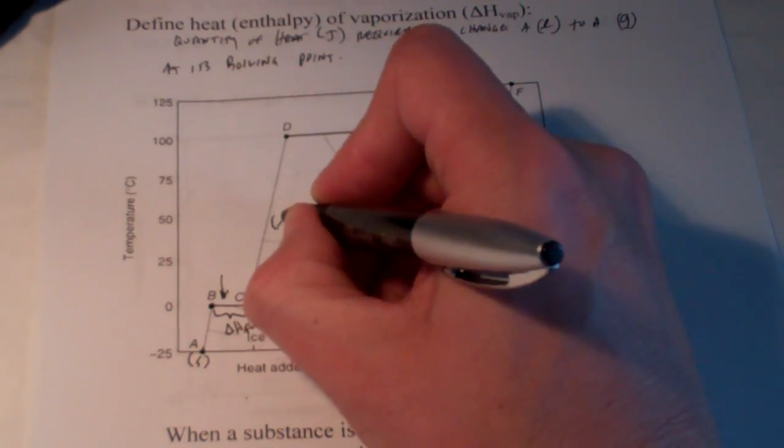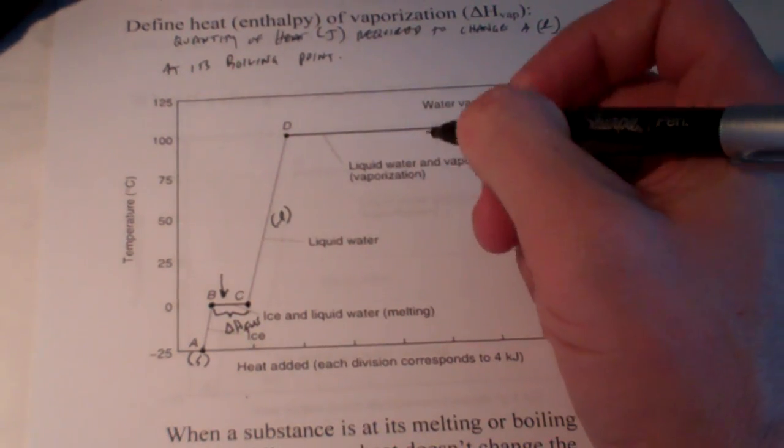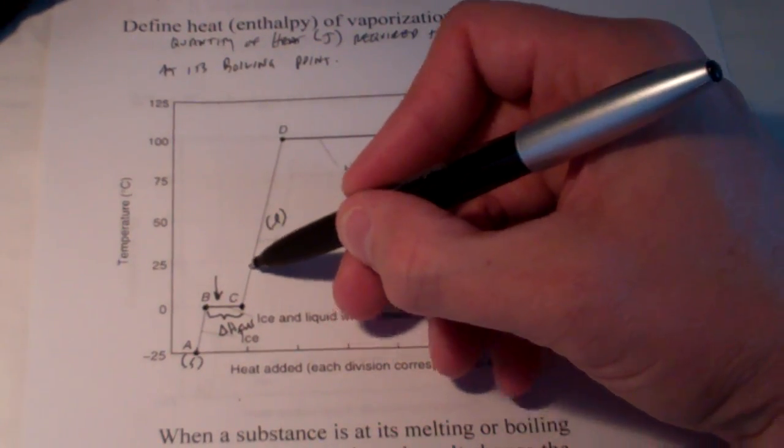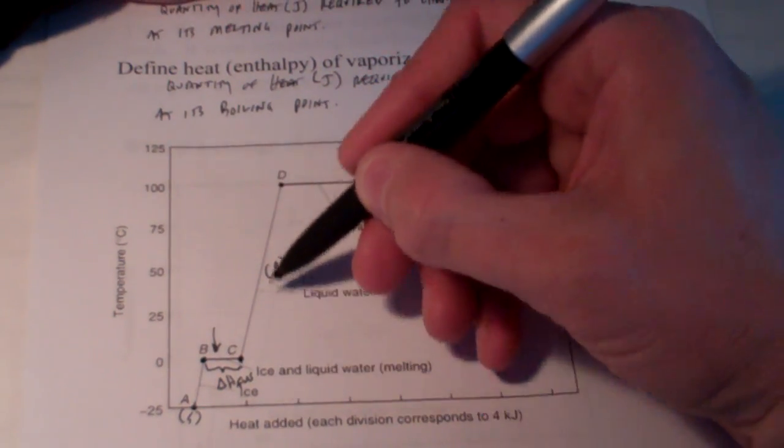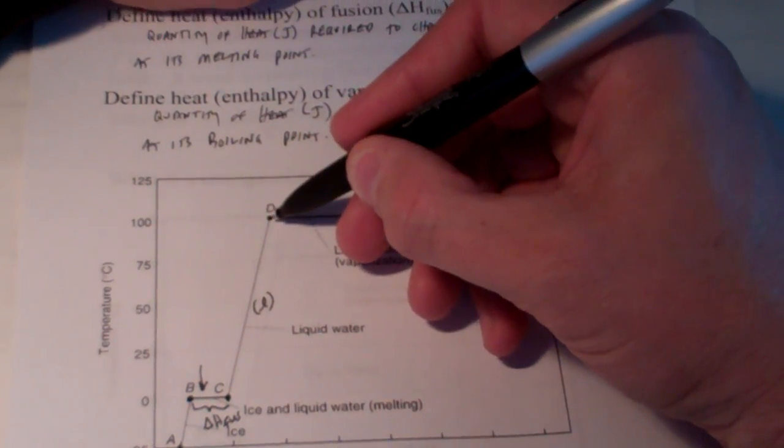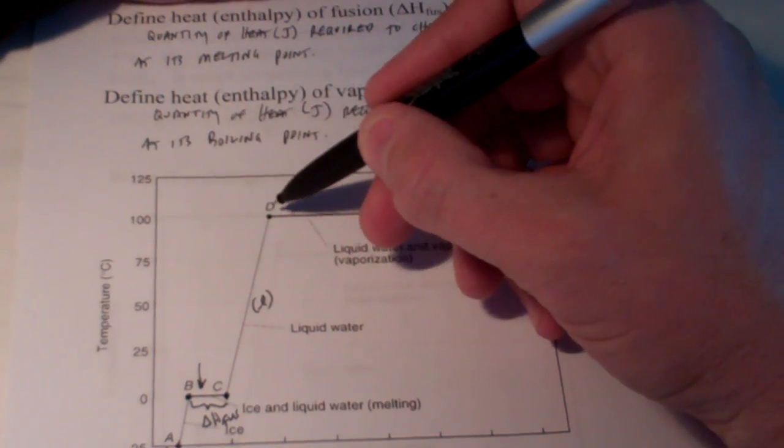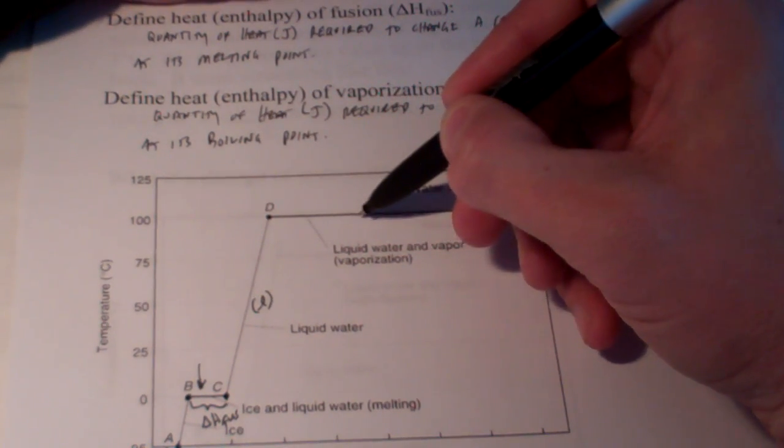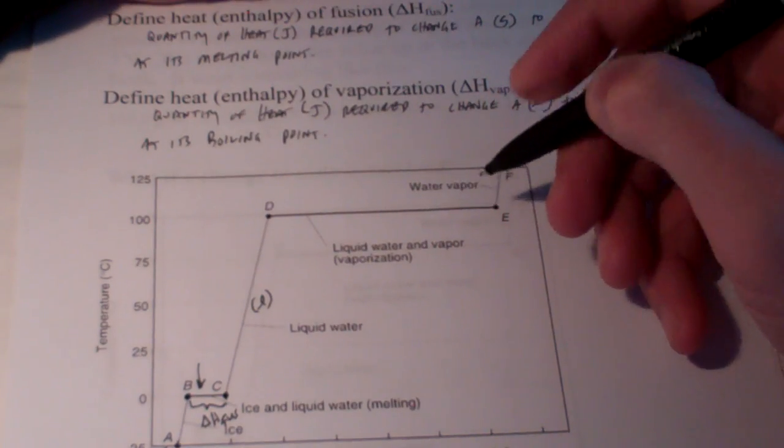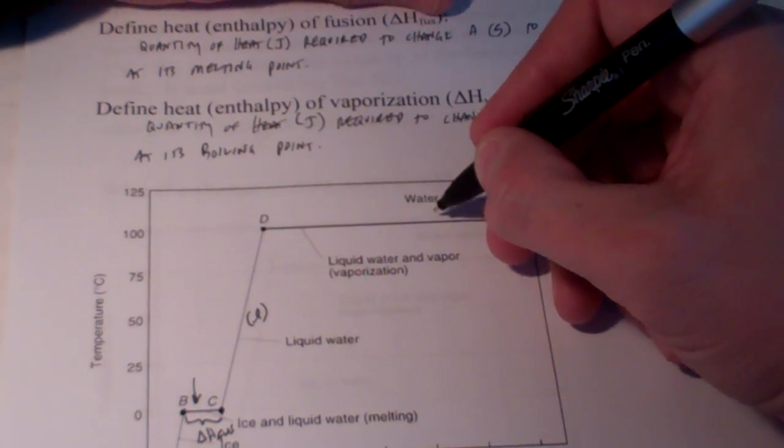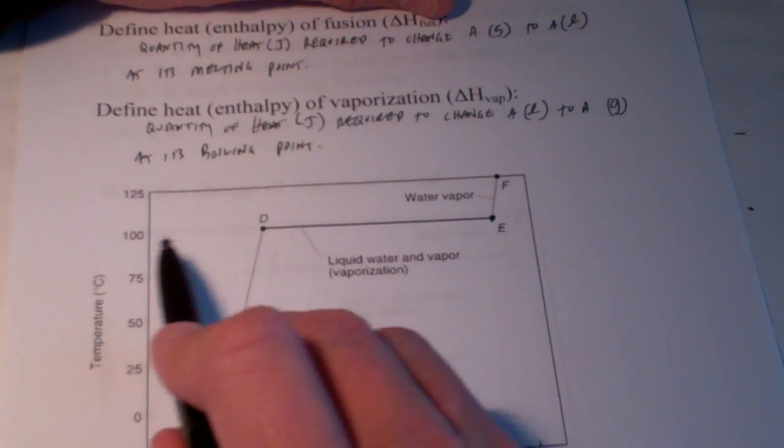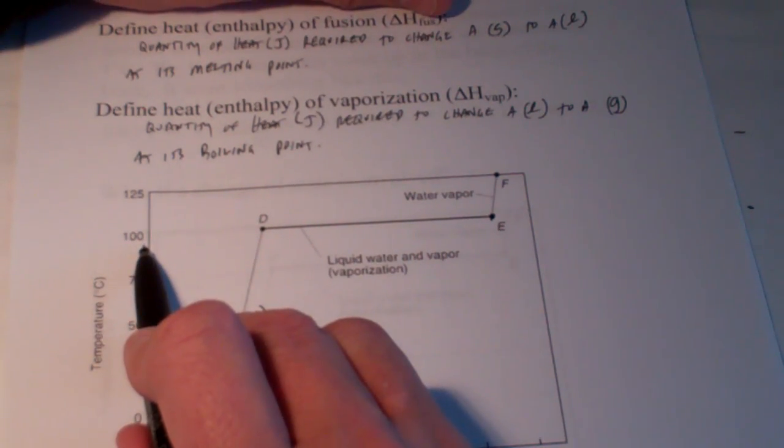So, right here, we have the liquid phase. And that temperature continues to increase as we add more and more heat. And then at point D, you'll notice the temperature stops increasing again. And we have a nice steady temperature as we are adding more and more heat until we get to point E. Well, what do you think is happening here? We're adding heat, but the temperature stays at 100 degrees Celsius.